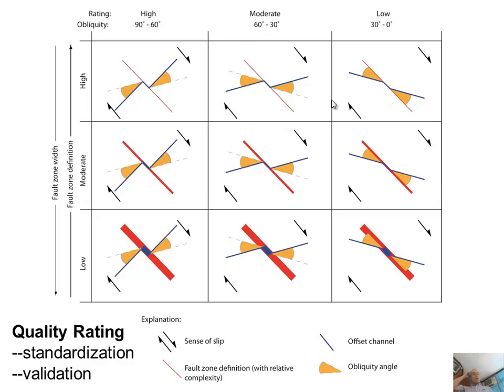One control on the quality of the offsets is something about the fault zone width and the obliquity. A good case would be high obliquity — the stream channel comes in basically perpendicular to the fault and the fault is really narrow. This is good quality: high obliquity and narrow fault. Then a bad quality case would be a wide fault with high obliquity — it makes it much more difficult to interpret. We are experimenting with this sort of quality control for offset study.